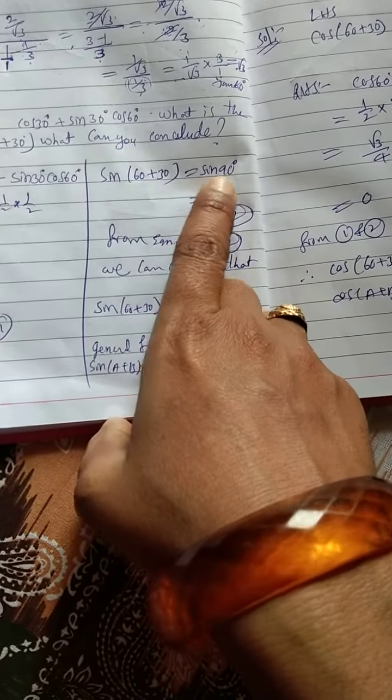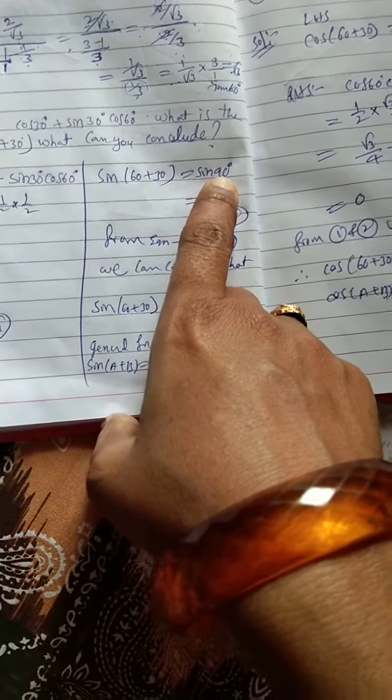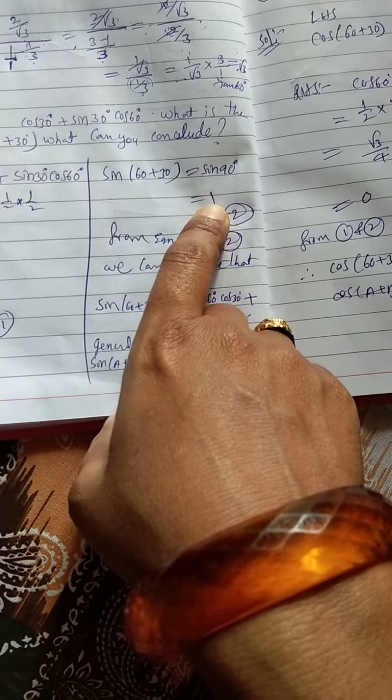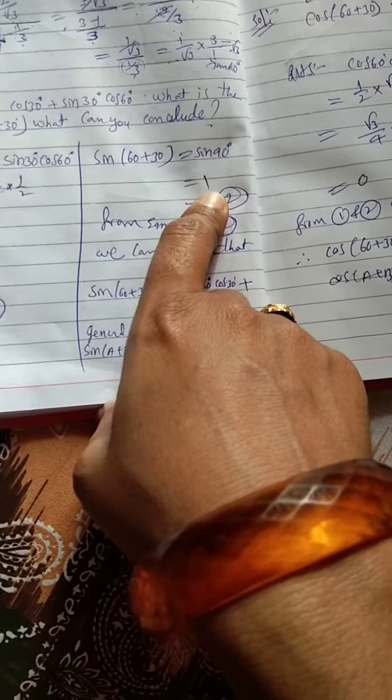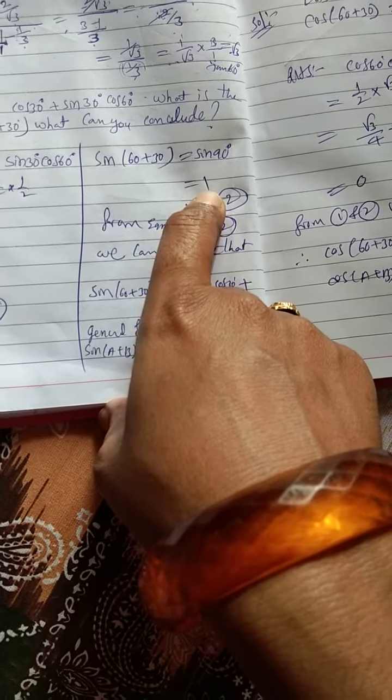Next, this value also, how to take? Sin 60 plus 30 is equal to sin 90, isn't it? Sin 90 value, what? Directly from the table, 1. Sin 0 is 0, sin 90 value is 1.